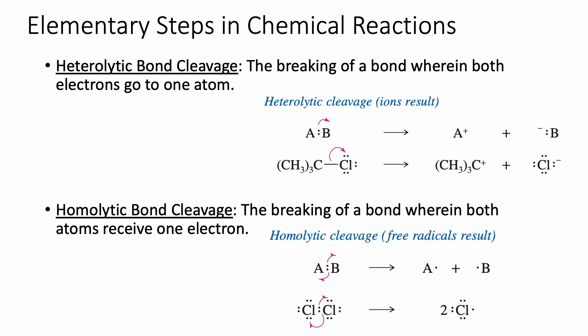In homolytic bond cleavage, the bond breaks symmetrically — one electron goes to the atom on the right and the other electron goes to the atom on the left. Again with A and B bonded together, instead of both electrons going toward B, one electron goes toward A and one goes toward B. Rather than having charged particles at the end, since one atom has lost and the other has gained electrons, we have ions that result.